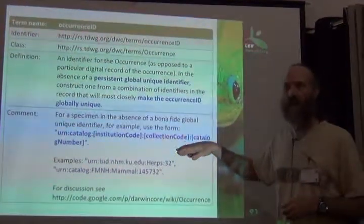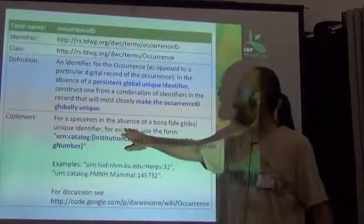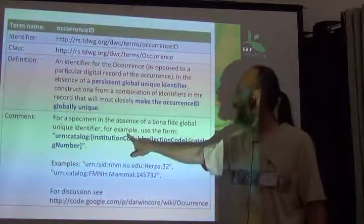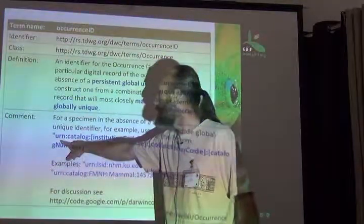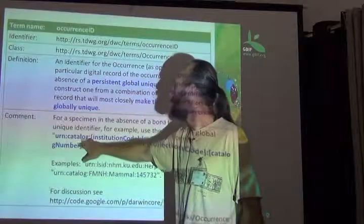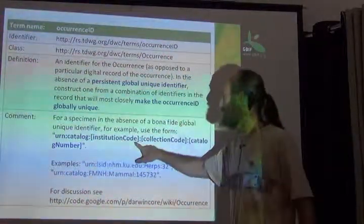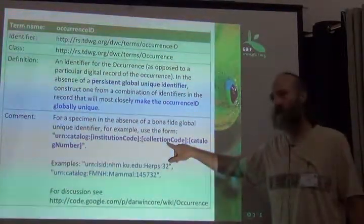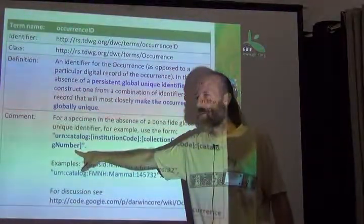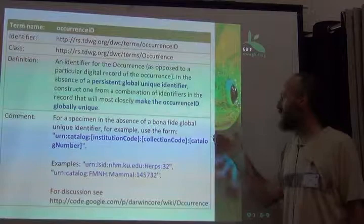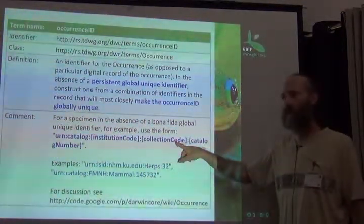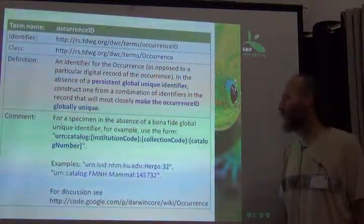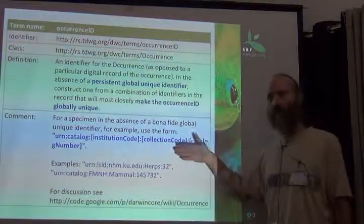In the comment, it describes a method for constructing one if you don't have another way. For specimens specifically, in the absence of a global unique identifier, one could construct one using this pattern: begin with URN, then 'catalog', then substitute the institution code, then a collection code, then a catalog number. The idea being that if catalog numbers are unique within collection codes, and collection codes are unique within institutions, then this string should be globally unique — and you should be able to recognize as a human something about what it means.